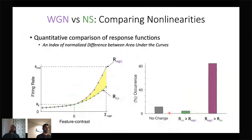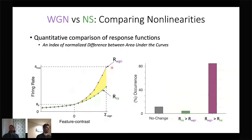Generalizing this analysis to cells with different numbers of filters, we used a quantitative index to measure changes in response functions between stimulus regimes. For 85% of cells, when the stimulus changed from natural scenes to white noise, there was a significant amplification in the response function within the range of feature contrasts of white Gaussian noise images. For about 5% of cells we found the opposite effect, and for about 10% no significant changes.